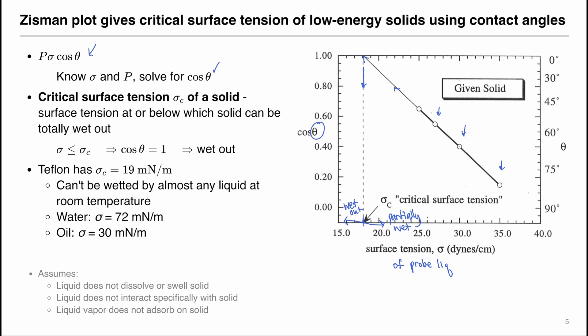When constructing the Zisman plot, we need to keep some assumptions in mind. The probe liquid must not dissolve or swell the solid, or else the surface energy will change. The probe liquid also cannot interact specifically with the solid — that is, there should be no hydrogen bonding or acid-base interactions. Also, the liquid vapor must not adsorb onto the solid, or else there will be complications from forming a monolayer on the solid surface. If all of these assumptions are satisfied, we can use probe liquids to determine the critical surface tension of a given solid.